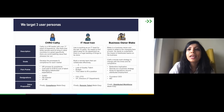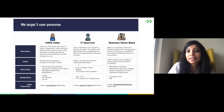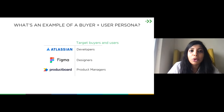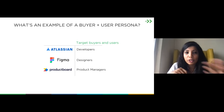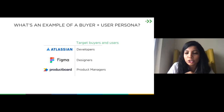Can you have multiple personas? You may end up targeting three: a buyer, a user, and an influencer. In this case, CHRO Kathy is the buyer, IT Head Ivan is the user, and Blake is the influencer. There are times when buyer and user personas overlap — especially with bottoms-up adoption, product-led growth, or prosumers. For example, Atlassian targets developers and spreads through the organization; Figma targets designers who both buy and use; Productboard targets product managers who end up as both buyer and user.